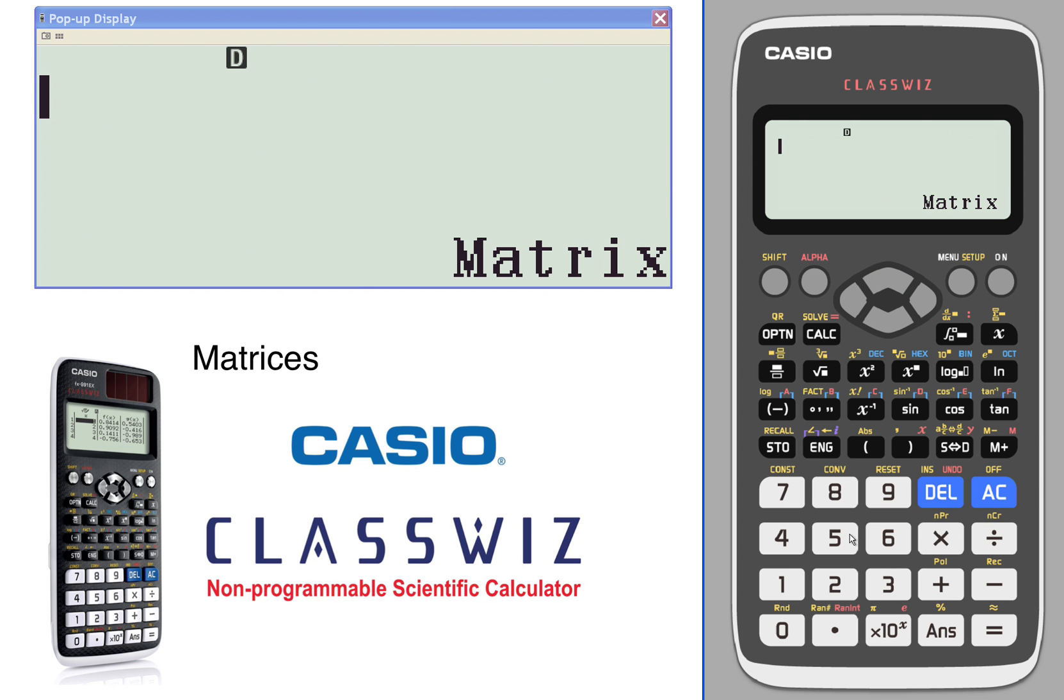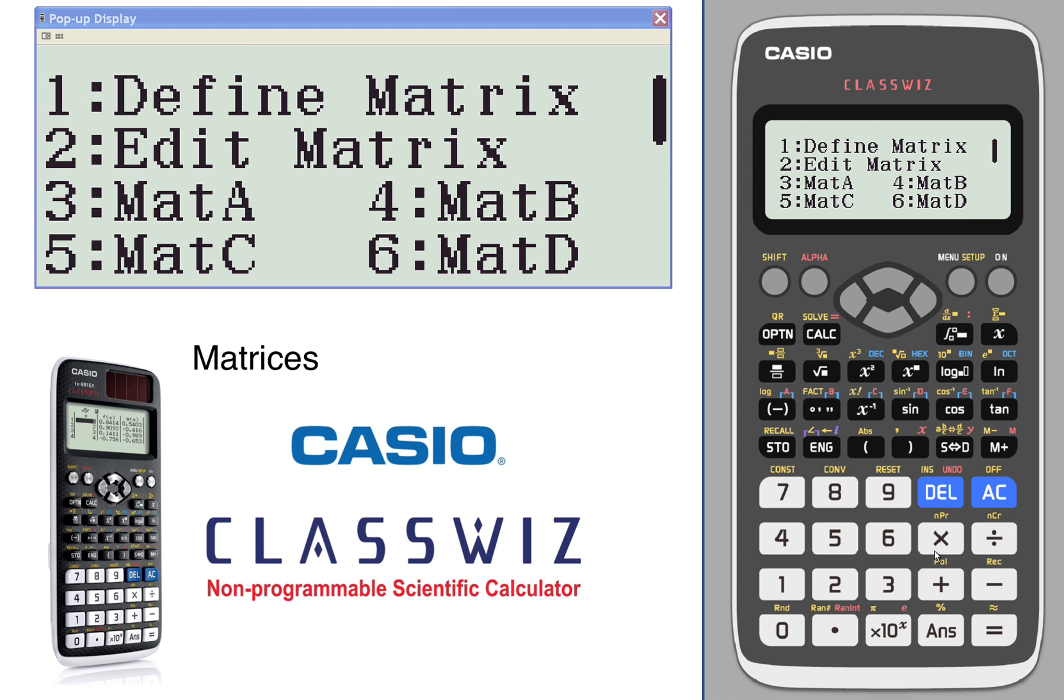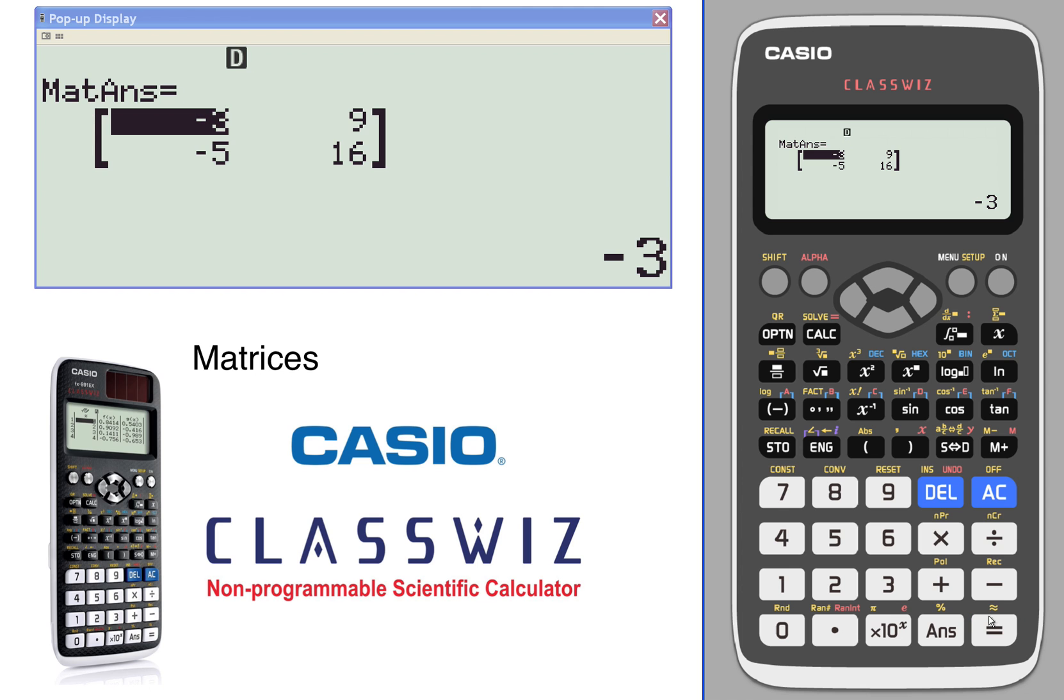Let's do some matrix addition. We'll start out with matrix A plus matrix B, which is under option B. Both 2 by 2's. There's our solution.